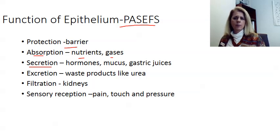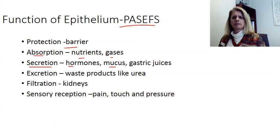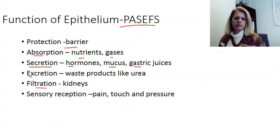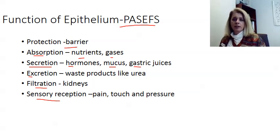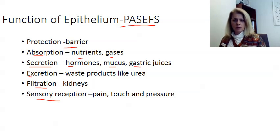You can secrete things — epithelial tissues allow you to secrete hormones, mucus, saliva, sweat, and gastric juices. They allow you to excrete waste products like urea; your kidneys use an epithelial layer for filtration to filter your blood and turn it into urine. And sensory reception, like pain, touch, and pressure. These are all the things epithelial tissues can do. In the next video we'll talk more specifically about where you find epithelial tissues and their specific functions in those parts of the body.